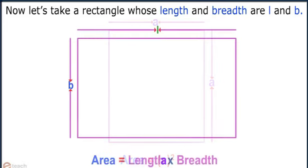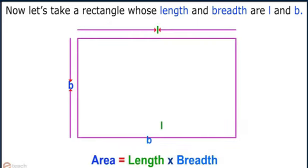Now let's take a rectangle whose length and breadth are L and B. We know that area of a rectangle equals length into breadth. Therefore, area equals L into B.